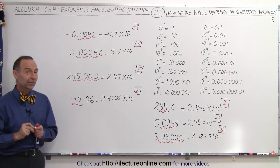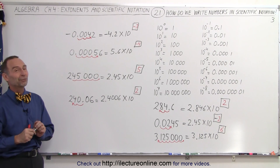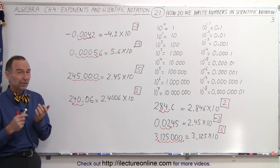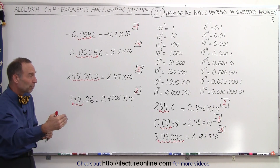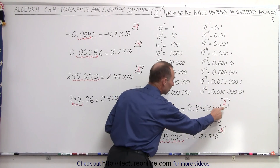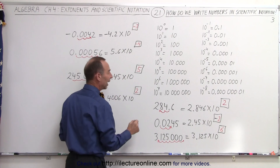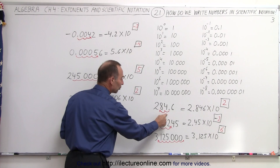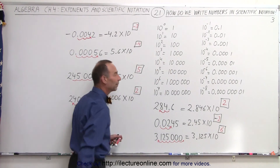And that is how we convert from decimal format to scientific notation format. It's really not that hard. All we have to do is realize: when we move to the left, we write a positive exponent. When we move to the right, we write a negative exponent. And the number of decimal place movements — the number of digits we move the decimal place — that's the number that goes on top.